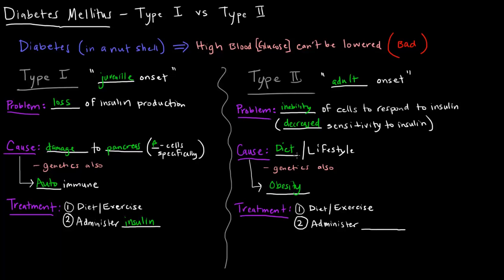For type 2 diabetics, can you just administer insulin? Generally speaking, no — though in some cases a larger dose might help due to their decreased sensitivity. But generally, administering insulin is not the best course of treatment. You may be familiar with a drug called metformin. What metformin does is increase the sensitivity of cells to insulin, essentially allowing insulin to actually work and be effective. It also decreases hepatic gluconeogenesis, meaning it causes the liver to stop producing and dumping excess glucose into the blood.